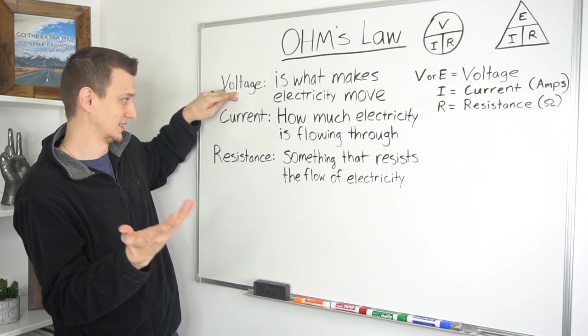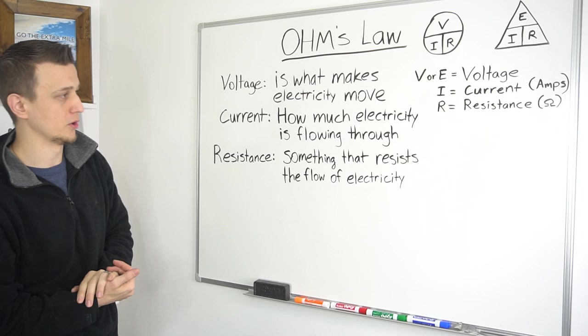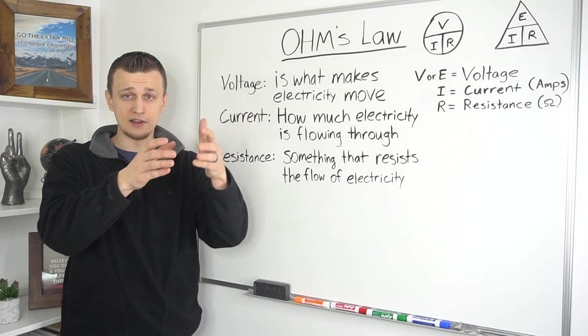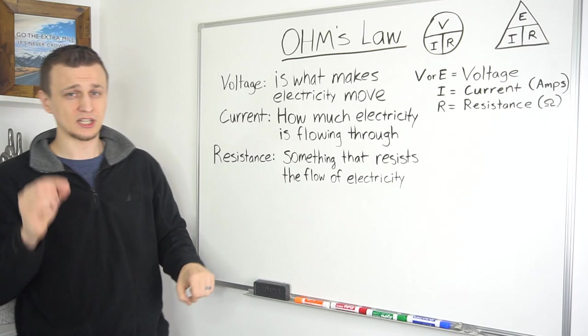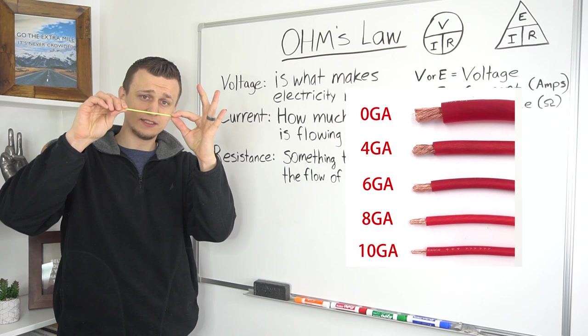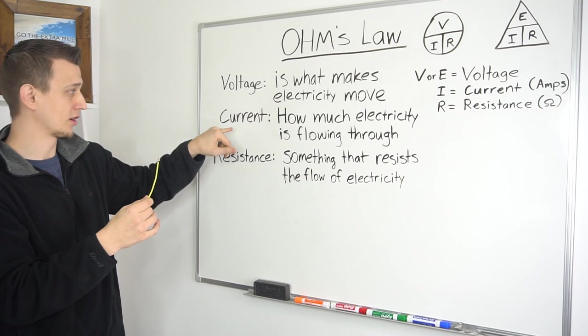As for current, current is how much electricity is flowing through. So in the example of water, that would be the volume of water, or how much water is flowing through the pipes. Now, the bigger diameter the water pipe is, the more water can flow through. And same with current. The thicker the gauge of wire is, so the thicker this wire is, the thicker the copper part is, the more electricity or current, more amperage can go through that piece of wire.